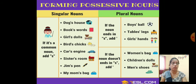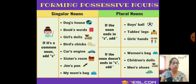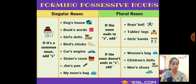When writing the possessive noun in plural form: if the noun ends in s, just add an apostrophe. Like: boys' ball, table's legs, girls' hands. If the noun doesn't end in s, add apostrophe-s. Like: women's bag, children's dolls, men's shoes. These are the ways of forming the possessive noun.